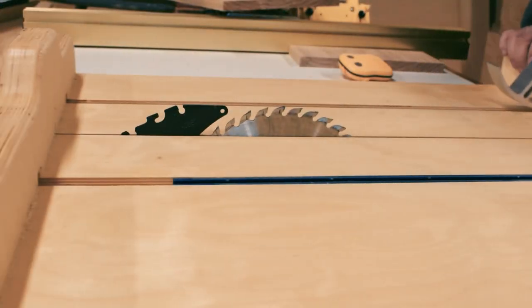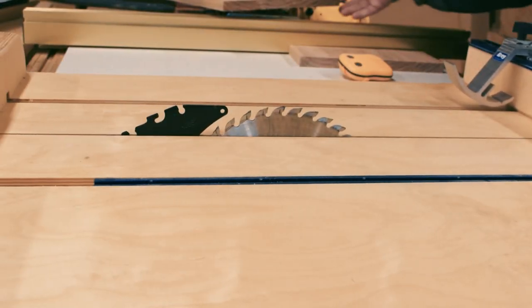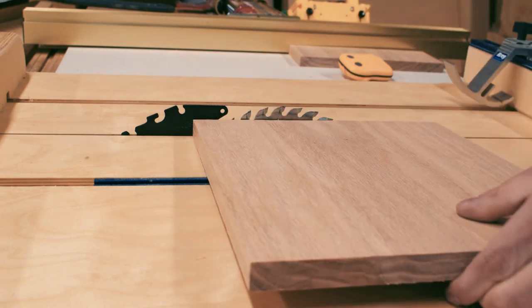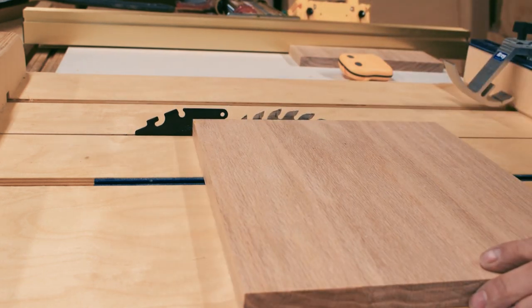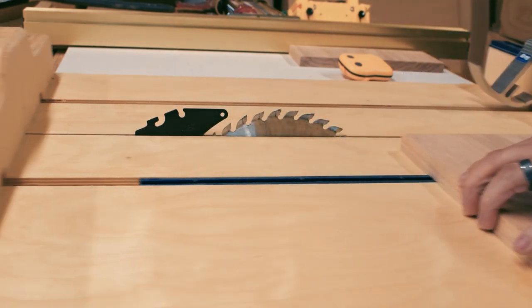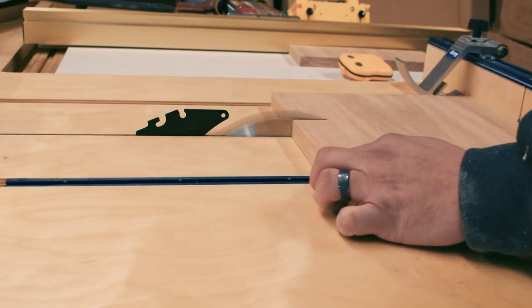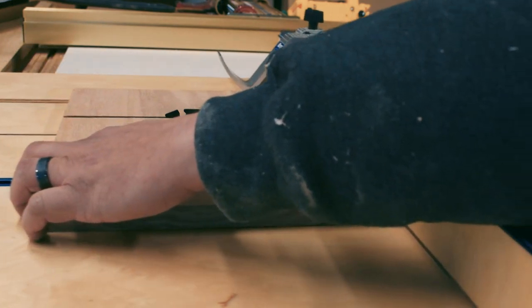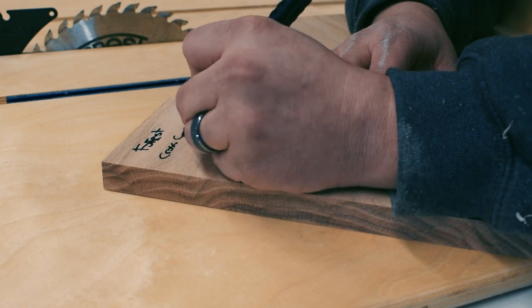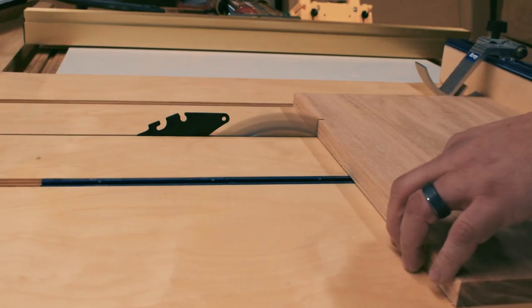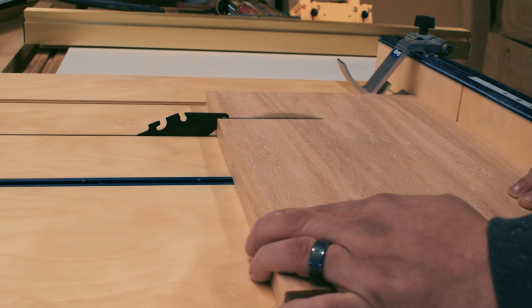Next, I'm going to break out the Nick Ferry crosscut sled. There's some pieces missing off of this because I harvested it for other projects. Don't judge me. I'm going to crosscut a thick four quarter piece of red oak for the next set of tests. If you want to build this crosscut sled, click on my card to go see Nick's video. He also has plans available for it too. I'll also put a link in the description below.